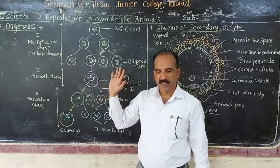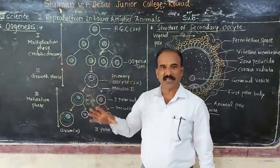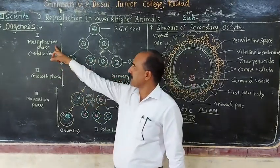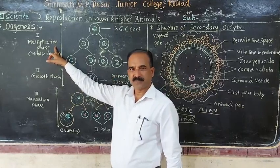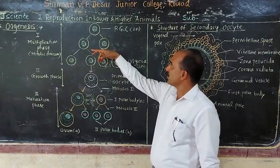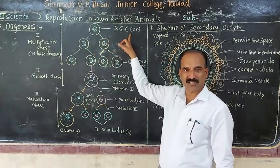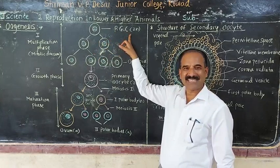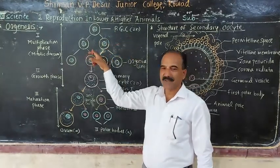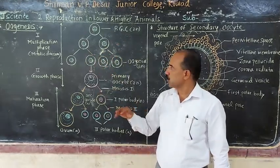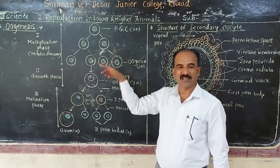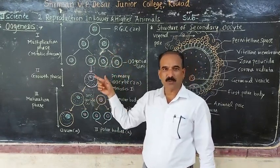Oogenesis is completed in three steps. The first step is the multiplication phase. Here, the primary germinal cells (PGC) undergo repeated mitotic divisions.